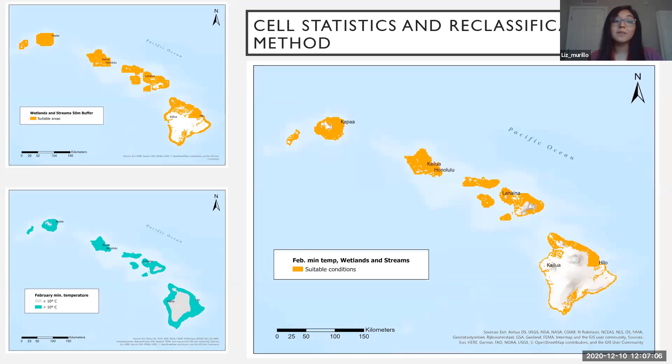And then I combined my wetlands and streams buffer data with the minimum temperature of February data. The larger map shows the areas that have both. I used the cell statistics tool to include areas that have wetlands and streams, but also are warm enough for mosquito survival. Because even if it's barely warm enough, they might not have a water source and therefore may not survive. So I want areas that have the water source and also provide the warmer climate for them.